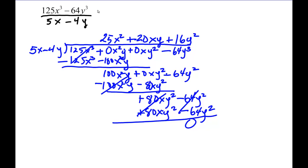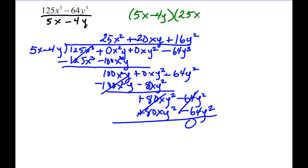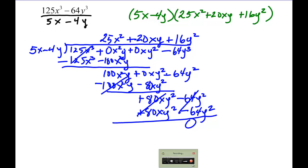So what does that mean? It means the factors of the original polynomial 125x cubed minus 64y cubed are: the original divisor we came up with — 5x minus 4y — times this new quotient we developed through long division: 25x squared plus 20xy plus 16y squared. And that's my last example for today. Feel free to watch this video as many times as you need to figure these out. Have a good one.